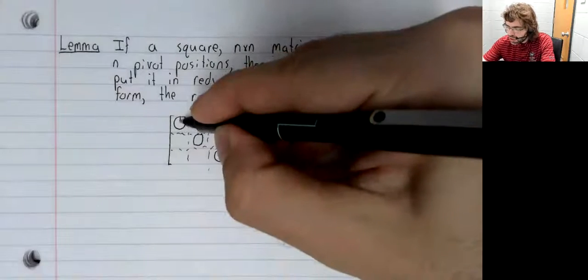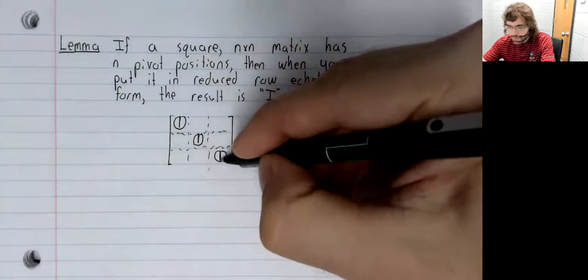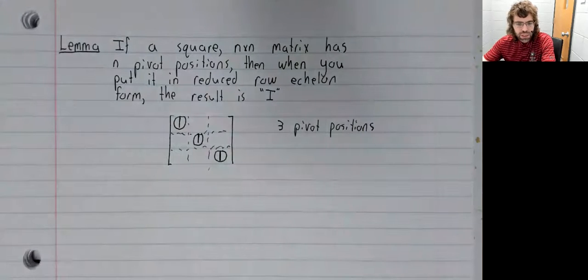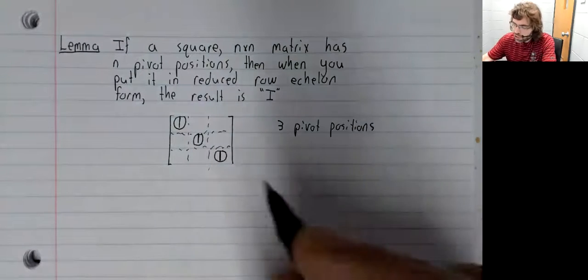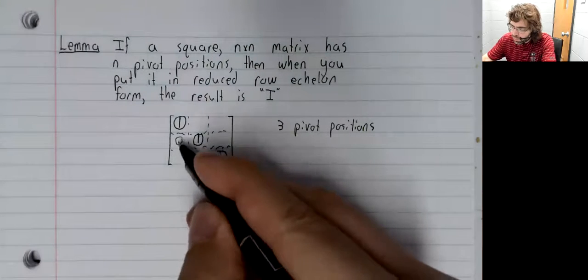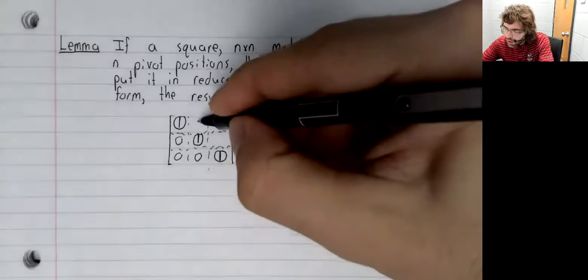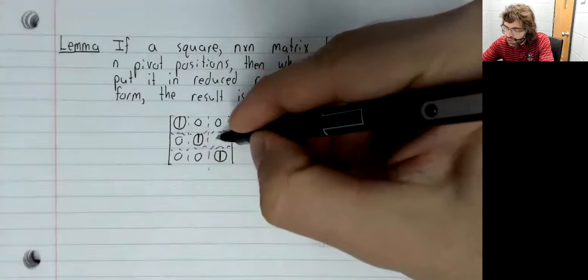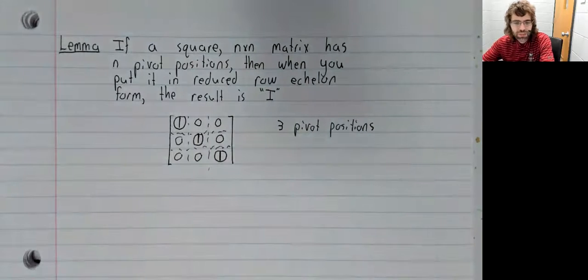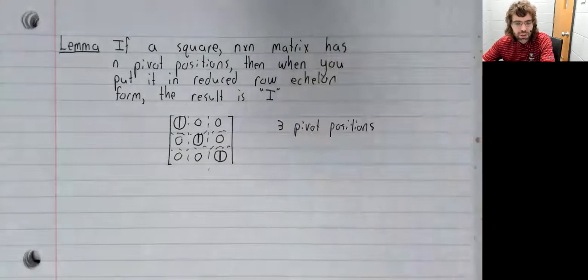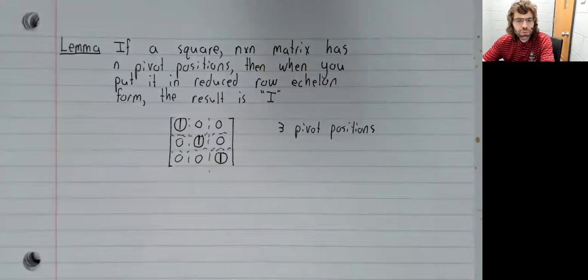So the leading entries are ones down the diagonal. Once it's in reduced row echelon form, everything below a leading entry is zero, and everything above a leading entry is zero. The leading entries are all one, and you have the identity matrix.